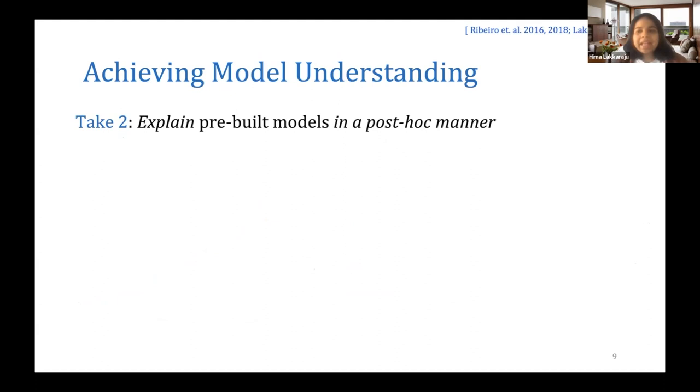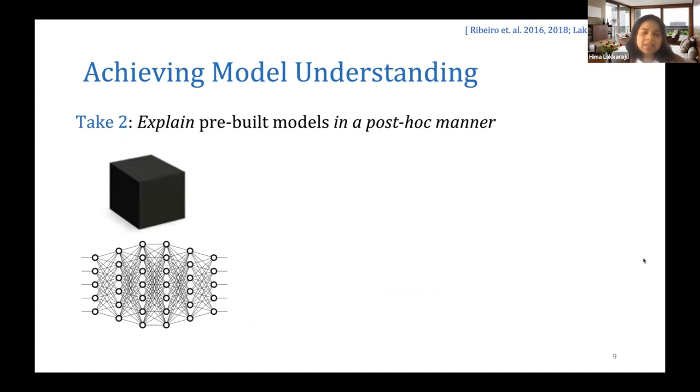What I mean by that is, for example, we could have a very complex model like a deep neural net with several hundreds or thousands of intermediate layers, or a model that's a black box, meaning we don't have any access to the internals of the model—we can just throw a data point at it and get an output from it.